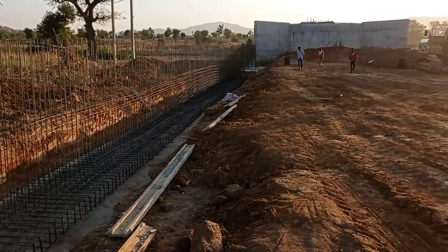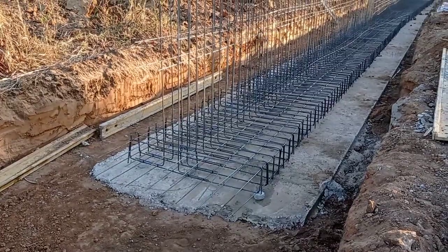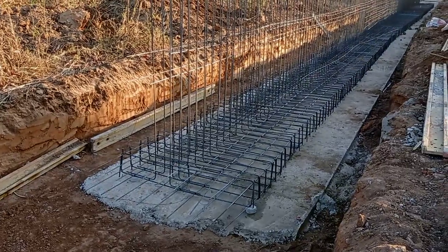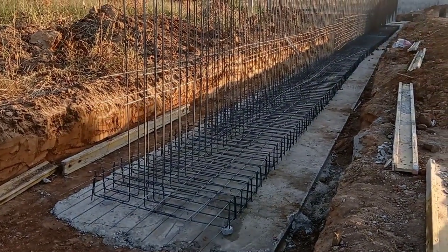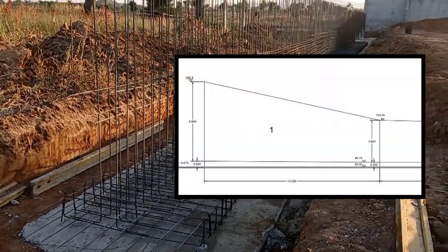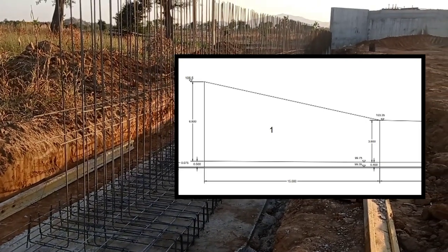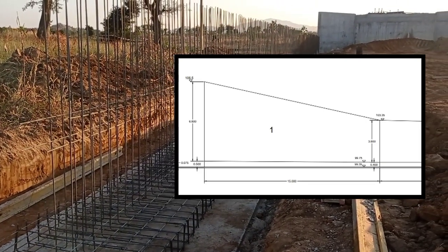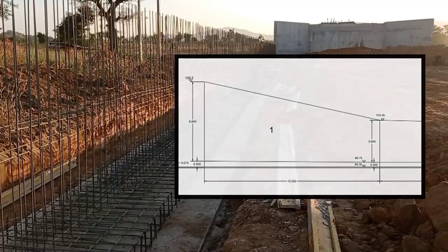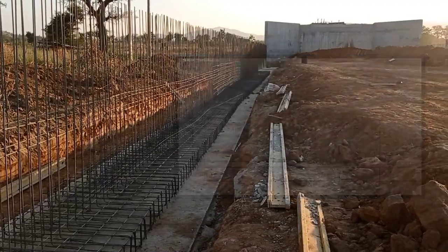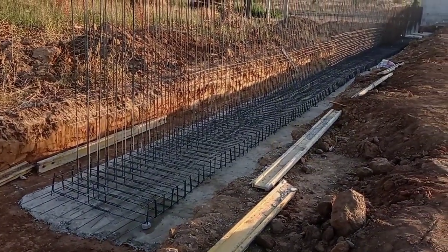The height of the wing wall at which our retaining wall is going to be started has a height of 6.8 meters, and this retaining wall will be constructed in seven segments. Each segment has a spacing of 15 meters.